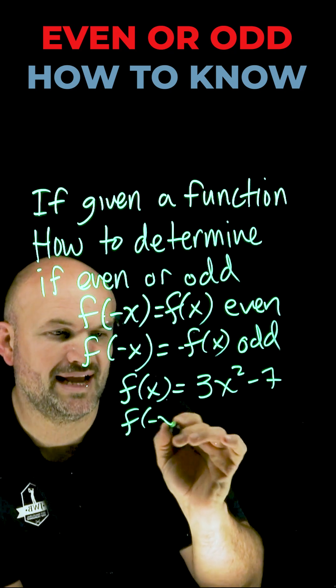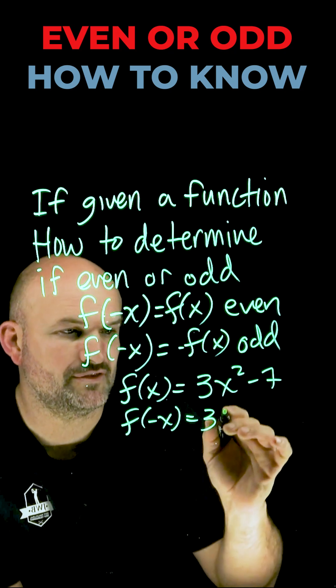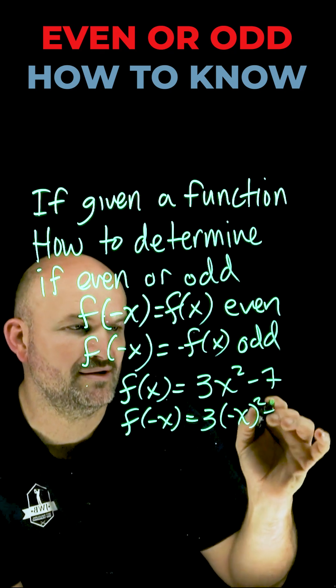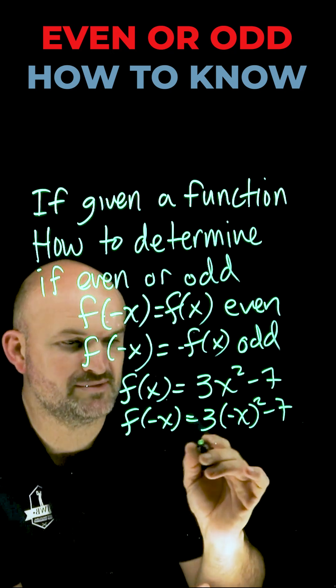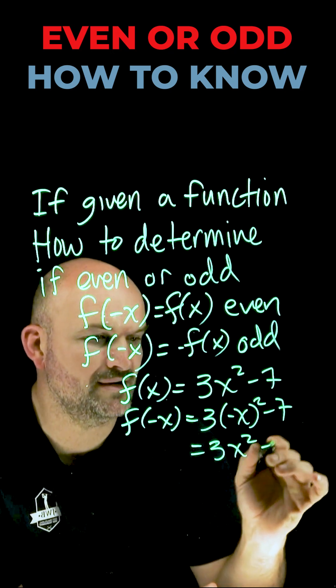When I go ahead and plug in a negative x, I'm now going to have 3 times negative x squared minus 7. Well, negative x squared is just going to be x² times 3 is going to give me 3x² minus 7.